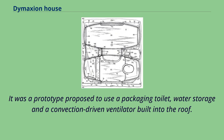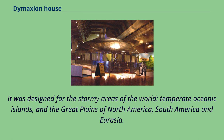The Dymaxion House represented the first conscious effort to build an autonomous building in the 20th century. It was a prototype proposed to use a packaging toilet, water storage, and a convection-driven ventilator built into the roof. It was designed for stormy areas of the world — temperate oceanic islands and the great plains of North America, South America, and Eurasia.